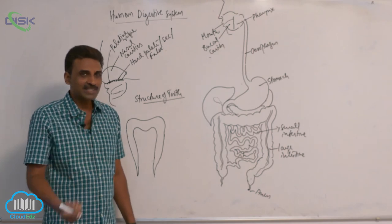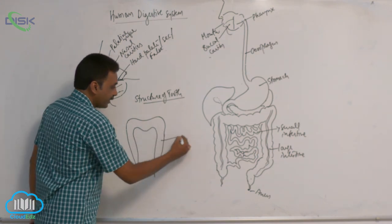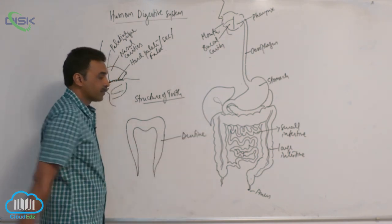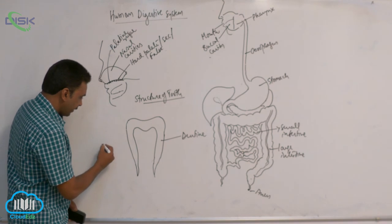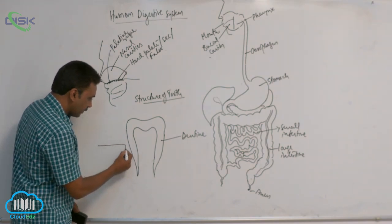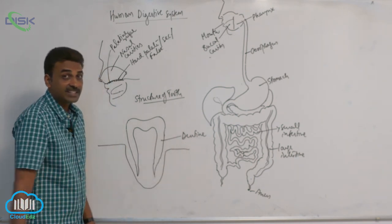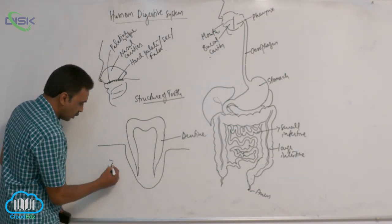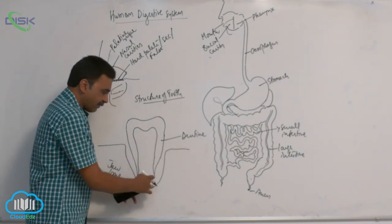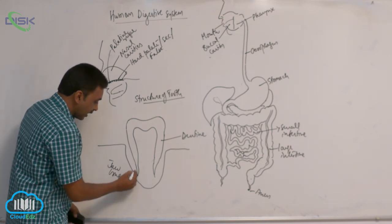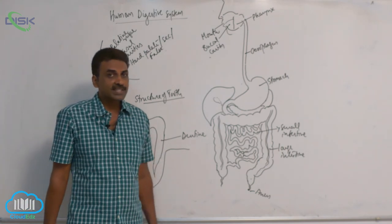Taking an individual tooth, the tooth is basically made up of dentine. A part of the dentine is present embedded inside the jaw bone. This is the jaw bone, and there is a cavity inside the jaw bone called the alveolus.